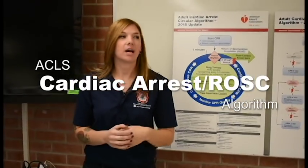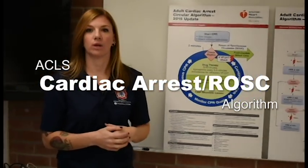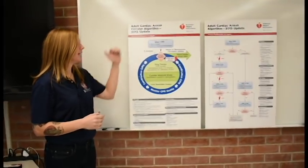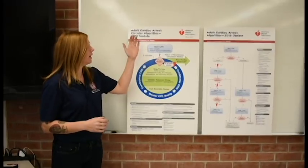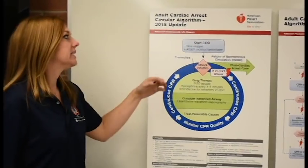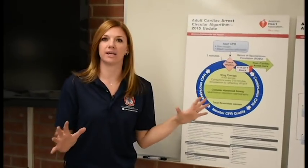Today we are going to be talking about the adult cardiac arrest algorithm. There's been some misnomers, but first what we're going to do is just go through the basics of adult cardiac arrest and how you are supposed to treat a patient when they code. The first one we address according to ACLS or even the American Heart Association is the circular algorithm, and it's the most basic algorithm.